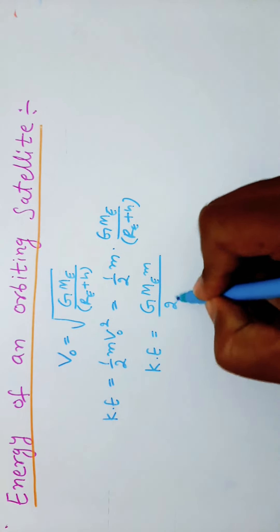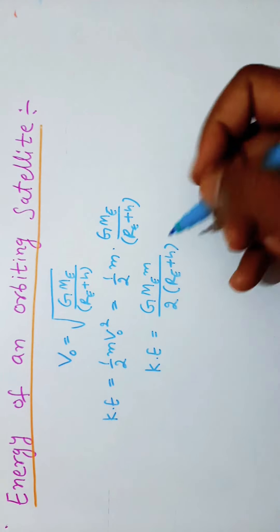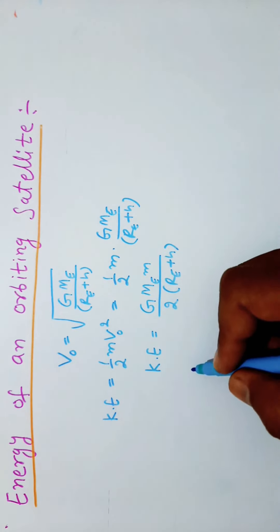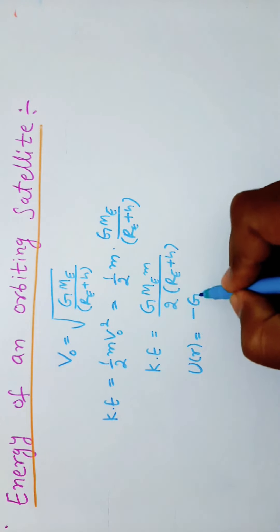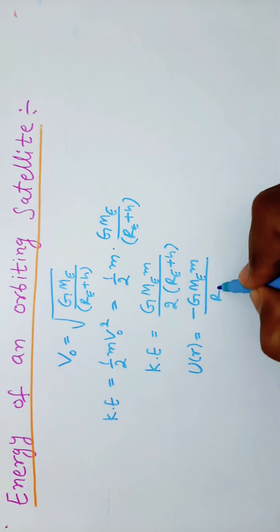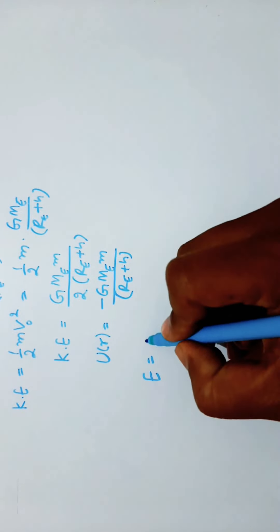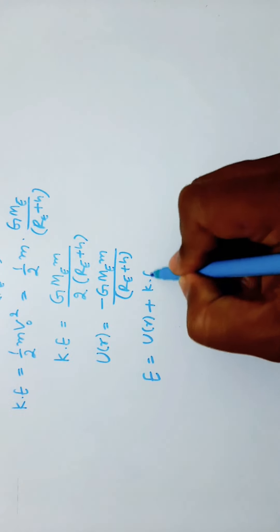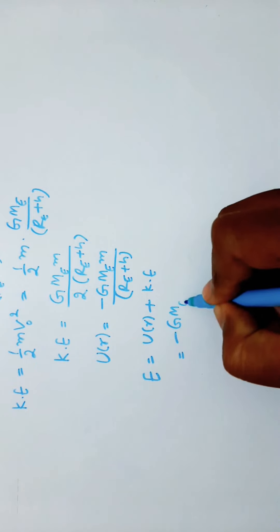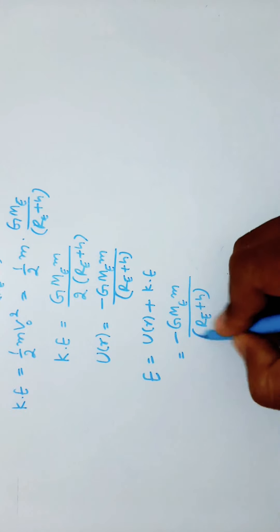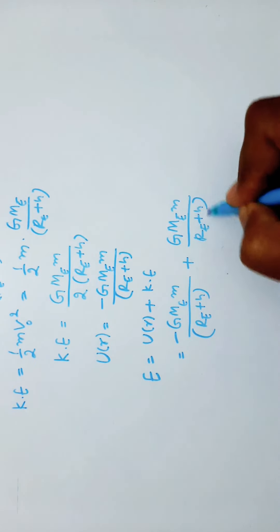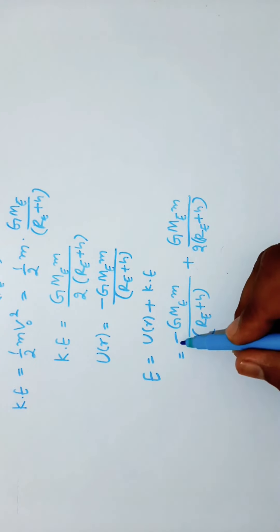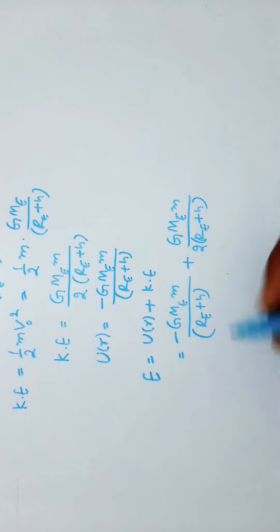We know the gravitational potential energy U(R) is equal to minus G times ME times small m divided by (RE plus H). The total energy E equals potential energy plus kinetic energy: minus G ME m divided by (RE plus H), plus G ME m divided by 2(RE plus H). This simplifies as minus 1 plus 1/2 equals minus 1/2, so total energy E equals minus G ME m divided by 2(RE plus H).